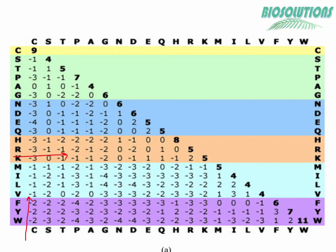We also use different colored zones. Each zone includes amino acids with similar physico-chemical properties. Hence, a change or substitution of an amino acid within the same group will most likely not receive a negative value. For example, aspartic acid (D) and glutamic acid (E) both have similar properties, so their substitution score is a positive 2.